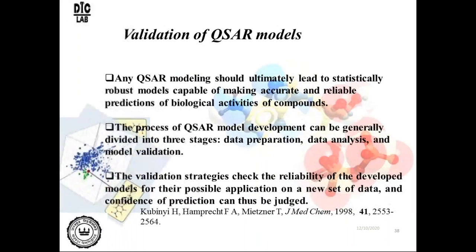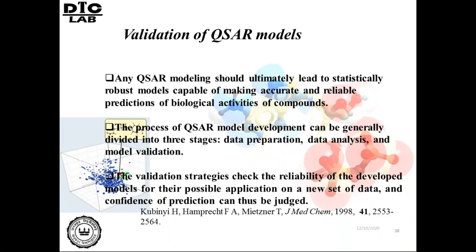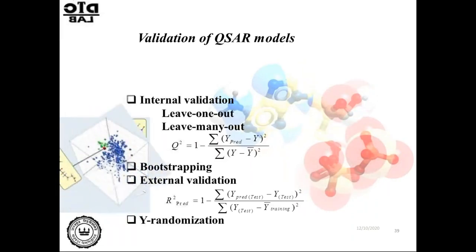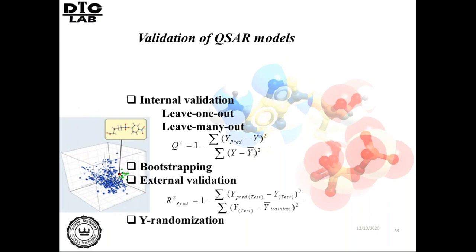Any QSAR model should be able to predict a new set of chemicals — that is the real application of QSAR, as models are generated for application to new chemicals, not training set data. Before synthesis, we may have some idea about the particular property or toxicity or activity, and based on that we can decide whether to proceed with synthesis and testing. Validation strategies check the reliability of the model, either using internal or external validation. Internal validation is done based on training set compounds only, either by leave-one-out approach — removing one compound per iteration, redeveloping the model, and predicting the omitted compound — or by leave-many-out approach. These give the metric Q-squared or cross-validated R-squared.